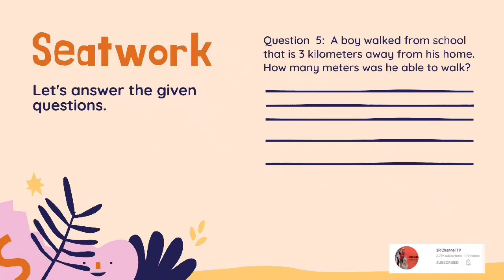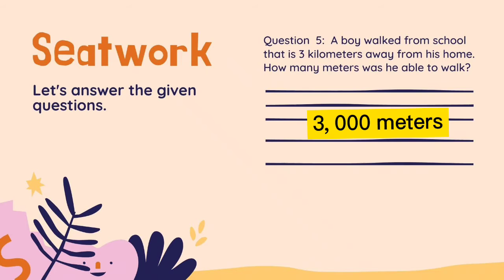Question number 5: A boy walked from school that is 3 kilometers away from his home. How many meters was he able to walk? Answer: 3,000 meters.